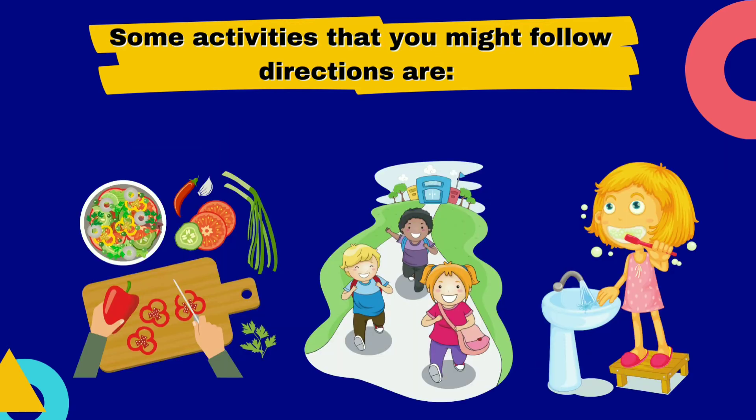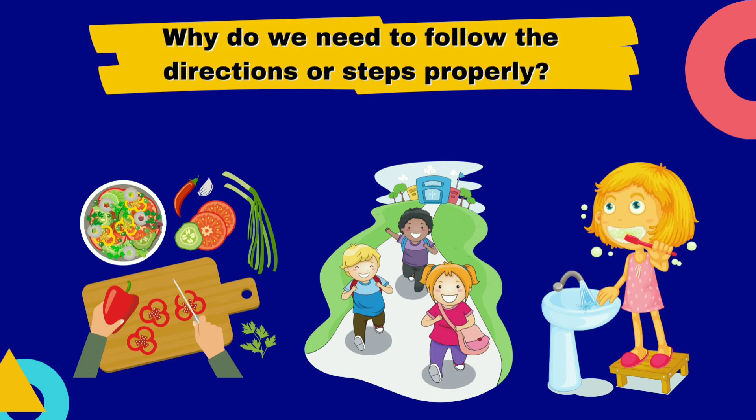Here are some of the activities where you might need to follow directions: in cooking, in going to school, and in brushing the teeth. Why do we need to follow the directions or steps properly? In order to make things correctly, like in cooking and brushing the teeth. Also, so we're not lost in going to places, like school.